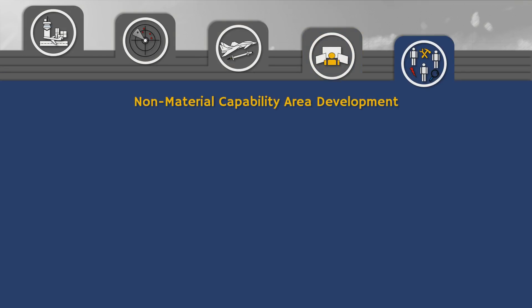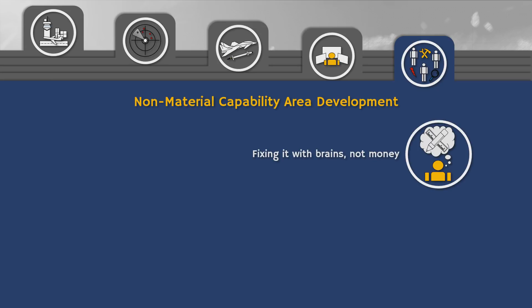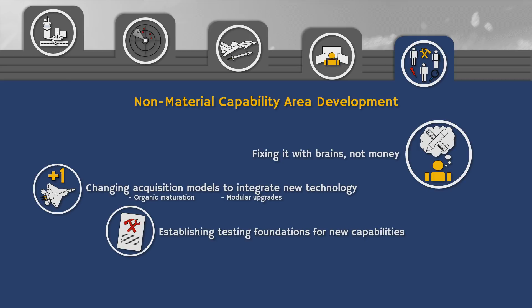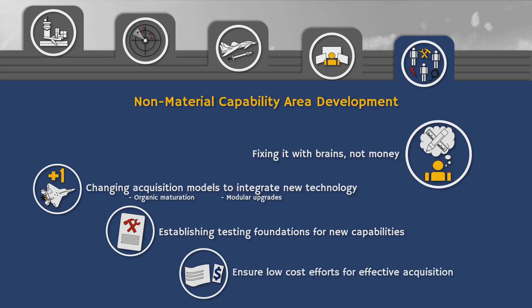Non-material Capability Area Development. Non-material capability developments are capability enhancements that do not require the development of a new technology or the acquisition of a new system — if you find a capability insufficient, you can sometimes fix it by changing your method of use. AS 2030 recommends applying a consistent effort in changing acquisition methods to continuously integrate new technologies within the Air Force, ensuring organic maturation of new systems. Systems should be built to facilitate modular upgrades. Testing foundations for new multi-domain capabilities should be enhanced to quickly assess feasibility, and low-cost efforts should be focused so technologies remain affordable, price-effective, and deployable in sufficient quantity within an acceptable timeframe.